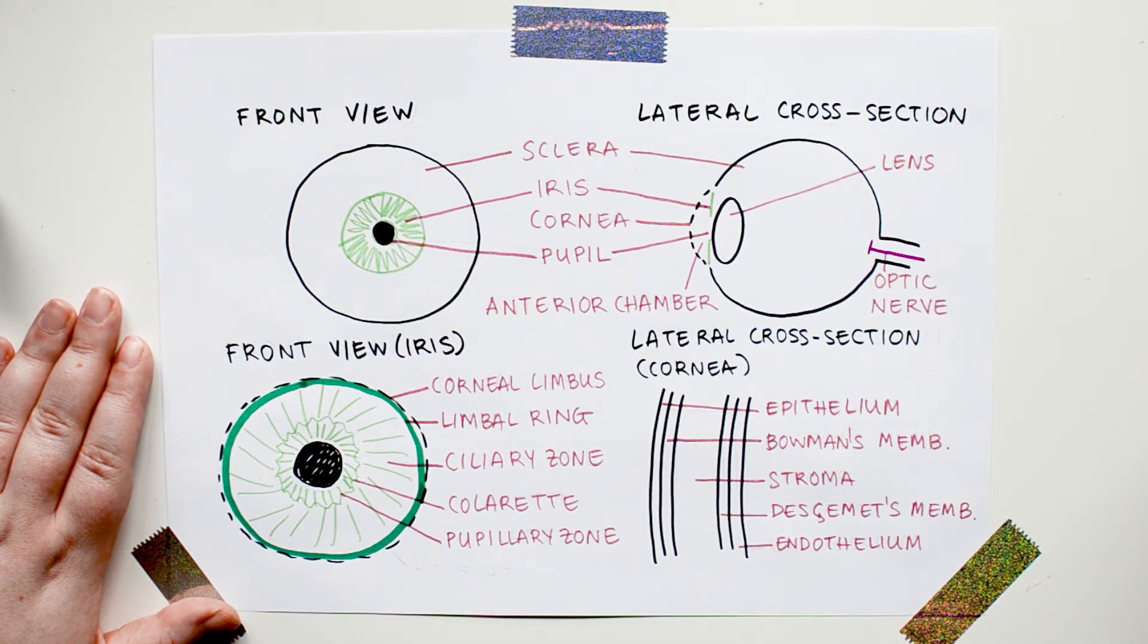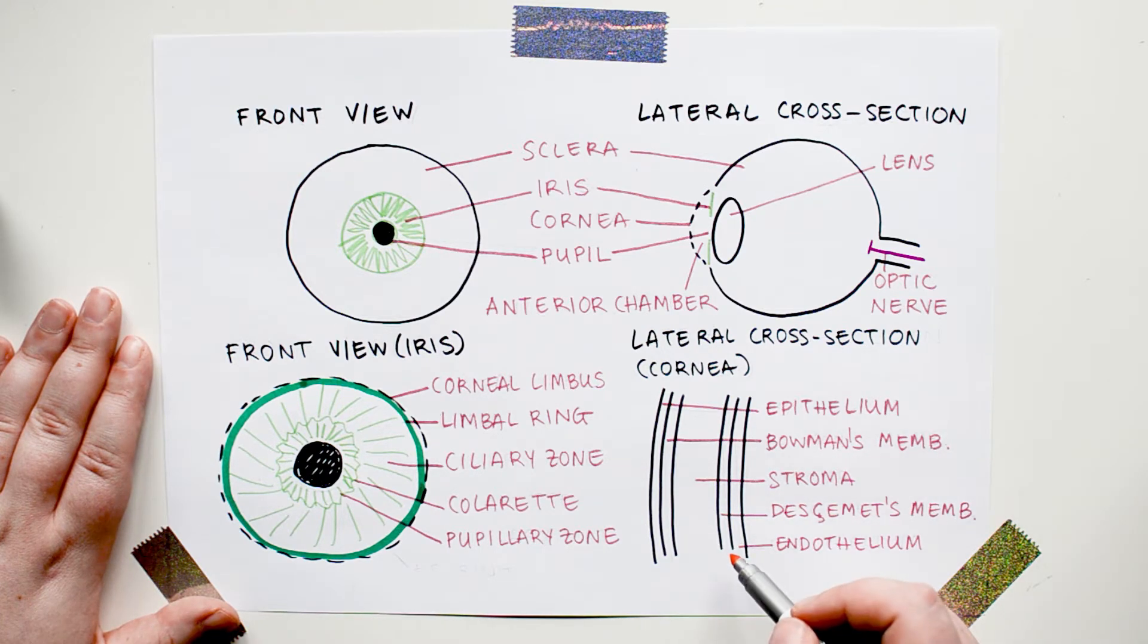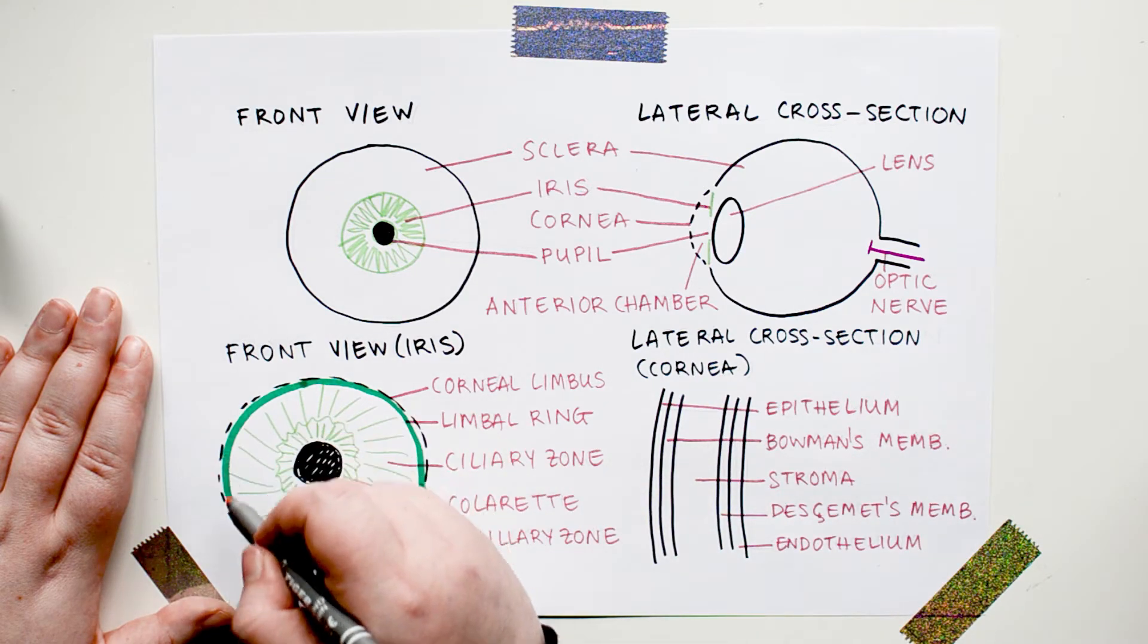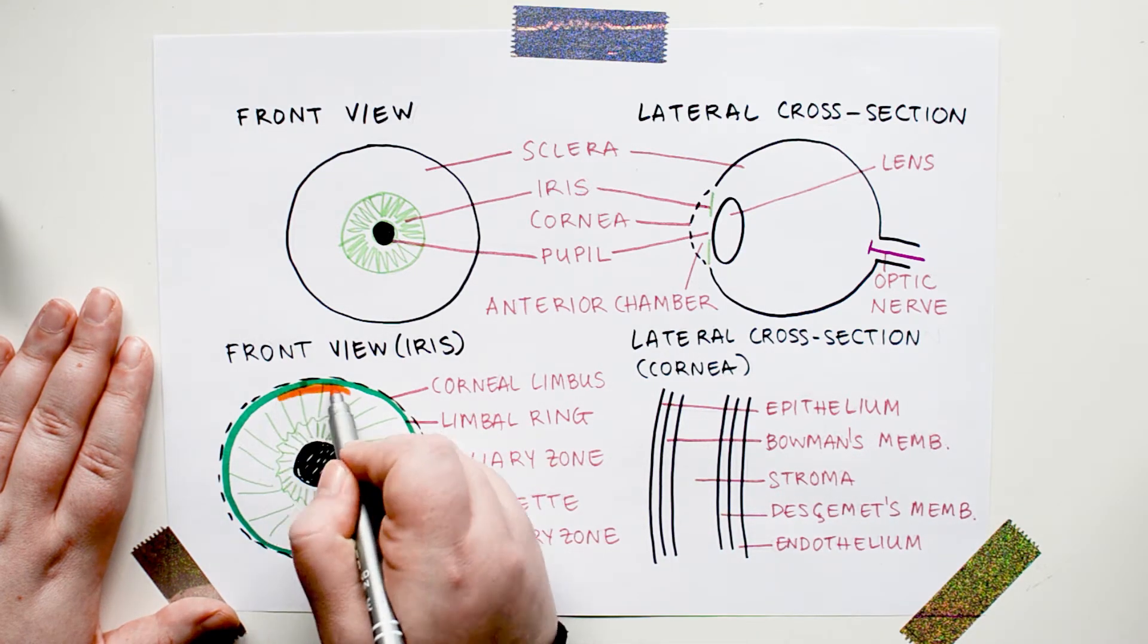Now we are ready to talk about KF rings. KF rings, short for Kayser-Fleischer rings, form when copper gets deposited on the Descemet's membrane of the cornea, which, remember, is the fourth layer, near the corneal limbus, which, remember, is the area where the cornea meets the sclera.